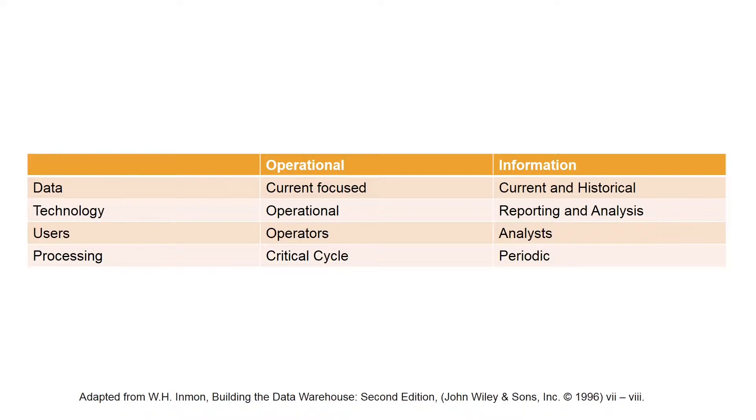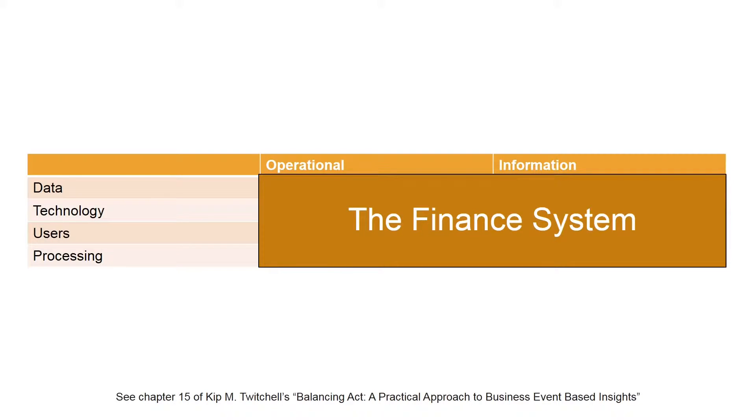As we noted in a number of the prior episodes, the financial system has both operational characteristics and informational characteristics. It has a cycle that has to be completed very consistently. At times when people are building data warehouses, they view the financial system as an operational system. The outputs from the financial system are put into the data warehouse to help produce reports, and much of the data that feeds into the financial systems also feeds the data warehouse.